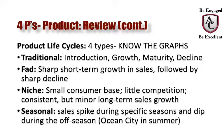A niche market has a small consumer base, little competition, and consistent but minor long-term sales growth. It's a small market, so you won't have huge sales, but the lack of competition is a pro. The con is that you won't have major growth — just a consistent, strong but small market base. An example is gluten-free foods, which are specifically for people who are gluten-intolerant or have celiac disease. Finally, seasonal products see sales spike during specific seasons and dip in the off-season — think Ocean City businesses in summer, or ski resorts and water parks.